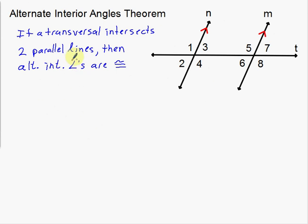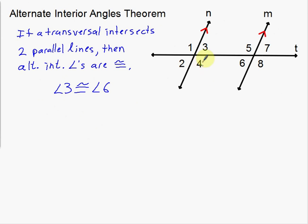Notice all the abbreviations and notation. Angle 3 is kind of a small angle, and angle 6 is also kind of a small angle — they're alternate interior angles. So angle 3 is congruent to angle 6. And angle 4 is congruent to angle 5. There are only four angles on the interior, so there are only two pairs of congruent alternate interior angles.